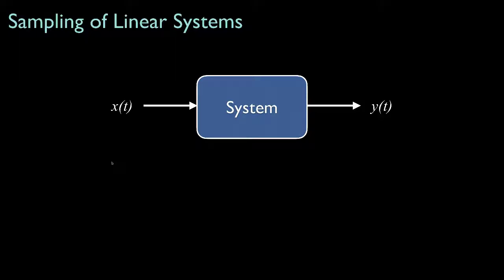In general, we typically associate some signal as the system input and another signal as the system output. In this diagram, for example, the signal x of t is the input, and the signal y of t is the output.